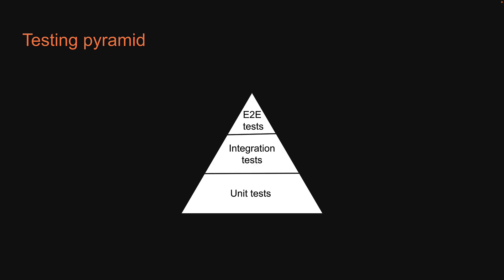The bulk of your tests are unit tests at the bottom of the pyramid. As you move up the pyramid, your tests get larger, but at the same time, the number of tests gets smaller. The right mix, of course, depends on the nature of the project. Unit tests are the easiest to write and maintain, but end-to-end tests give you the most confidence as they closely resemble a user testing your application.